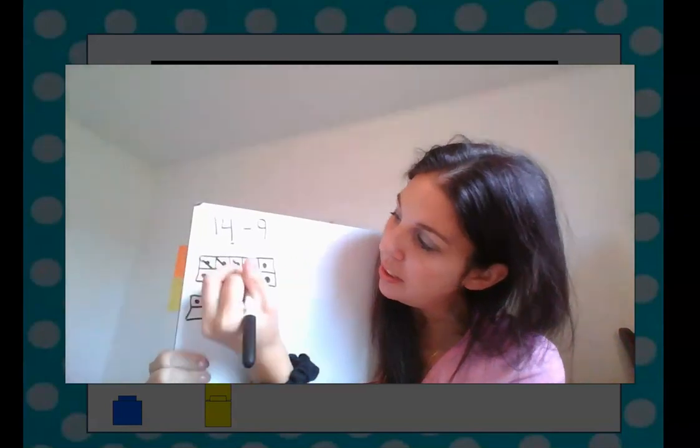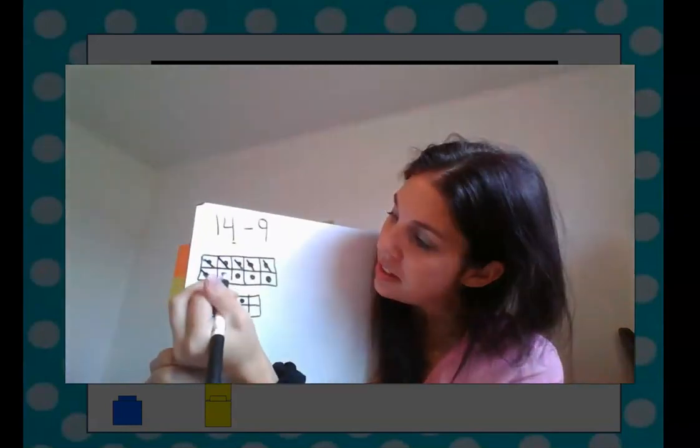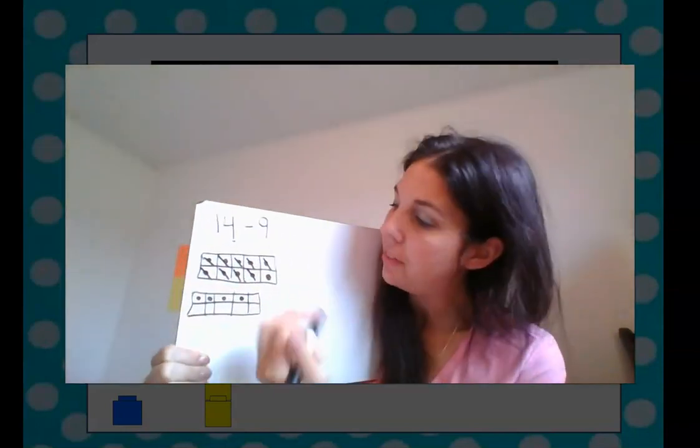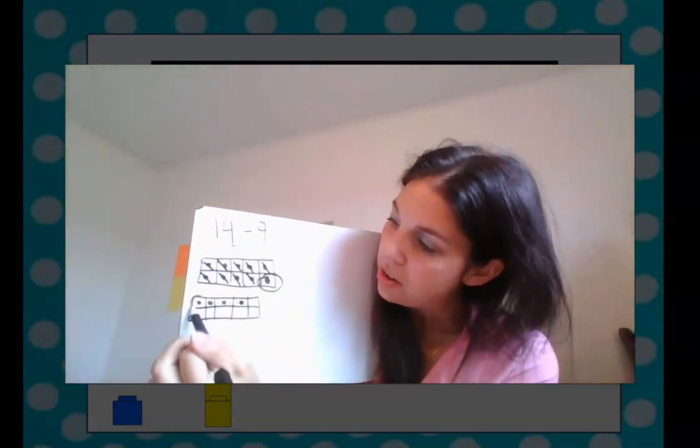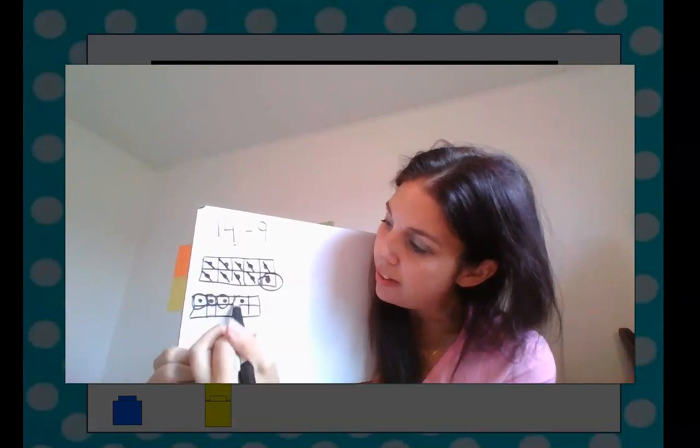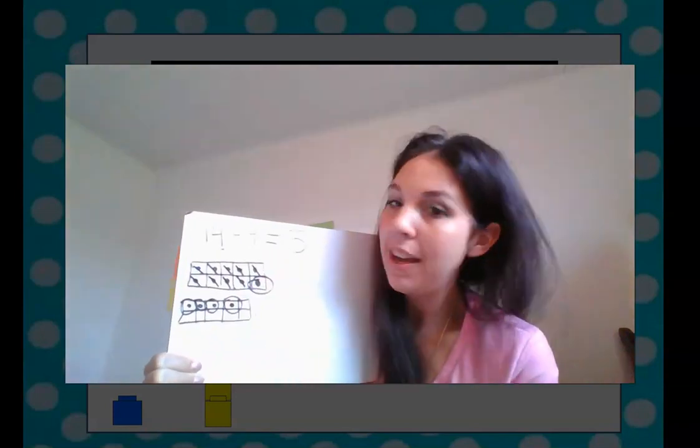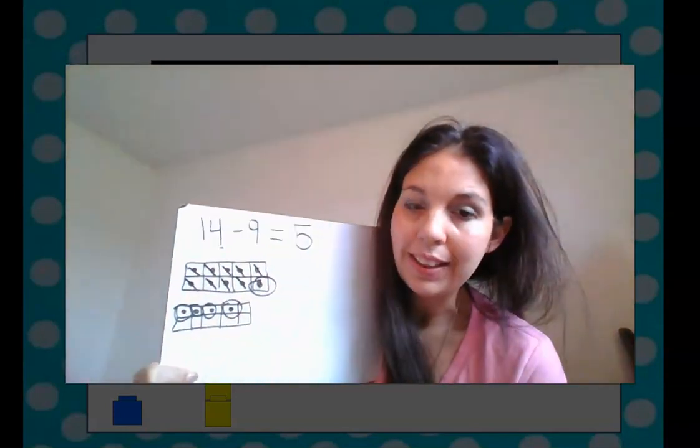So we have a picture showing 14. And now we're going to cross out 9. And we're going to do it from our big group of 10 up here. 1, 2, 3, 4, 5, 6, 7, 8, 9. And how many do we have left? We're going to count 1, 2, 3, 4, 5. We have 5 left.